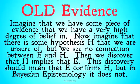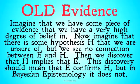The problem of old evidence goes something like this. Imagine that we have some piece of evidence E that we have a very high or certain degree of belief in. Now imagine there's some hypothesis H that we are unsure of, but we see at this point no connection between E and H. Then later we discover that in fact H implies E. This discovery should mean that E confirms H, because when you have an entailment relation, usually that means E will confirm H when H implies E. The problem is, in Bayesian epistemology, it in fact does not.